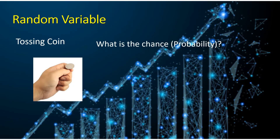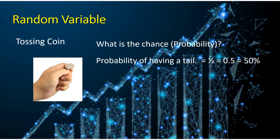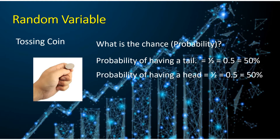Now, let's talk about the probability. What is the chance or probability of having a tail? Since in a coin there are two sides — a tail and a head — that means there is only one tail out of two possible outcomes. The probability of having a tail would be equal to 1 over 2, or 0.5, or 50%. Same goes for the chance or probability of having a head: that is 1 over 2 possible outcomes, equal to 0.5 or 50%.